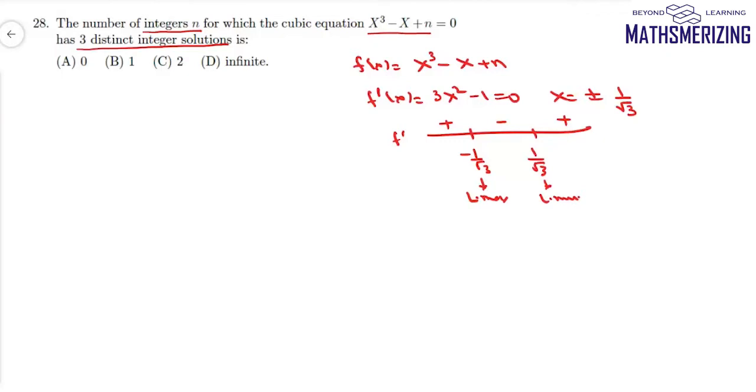Now this cubic equation will have a local maximum at -1/√3 and a local minimum at +1/√3. So it will start from minus infinity, take its maximum value, then take its minimum value at +1/√3, and that value should be negative only then it can have three real roots.